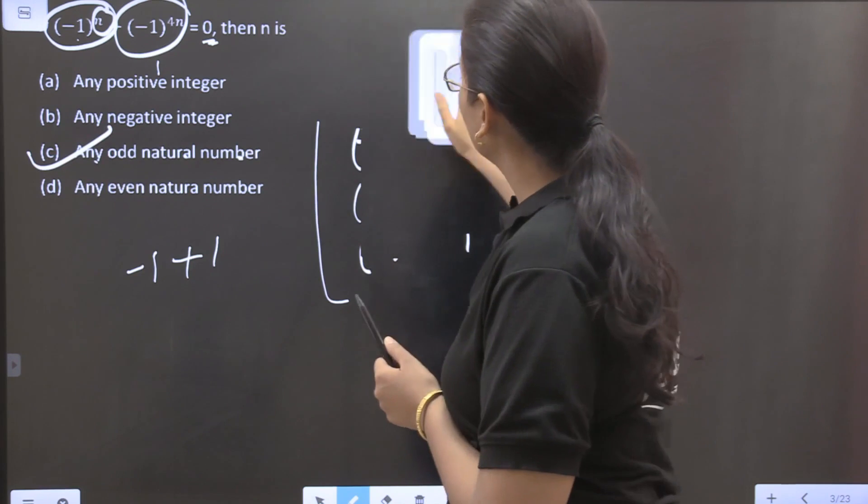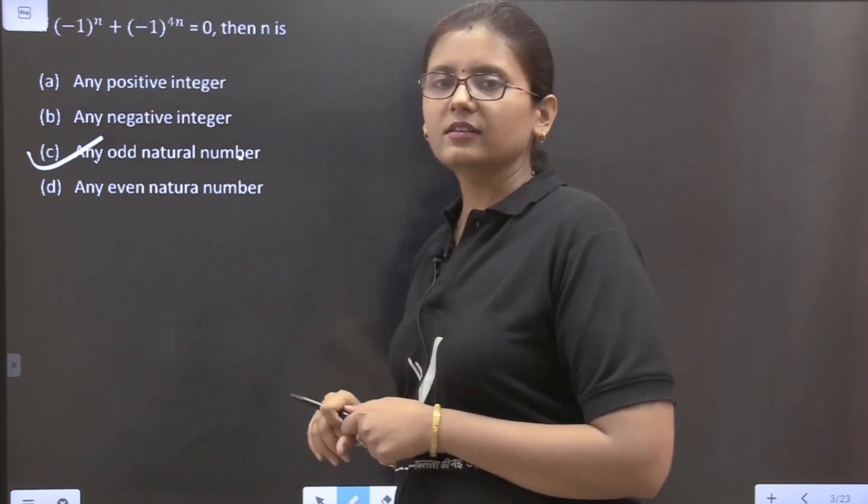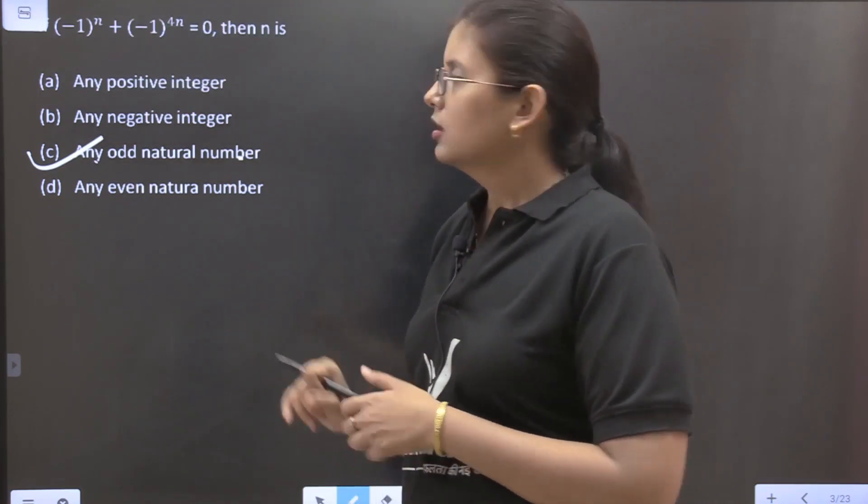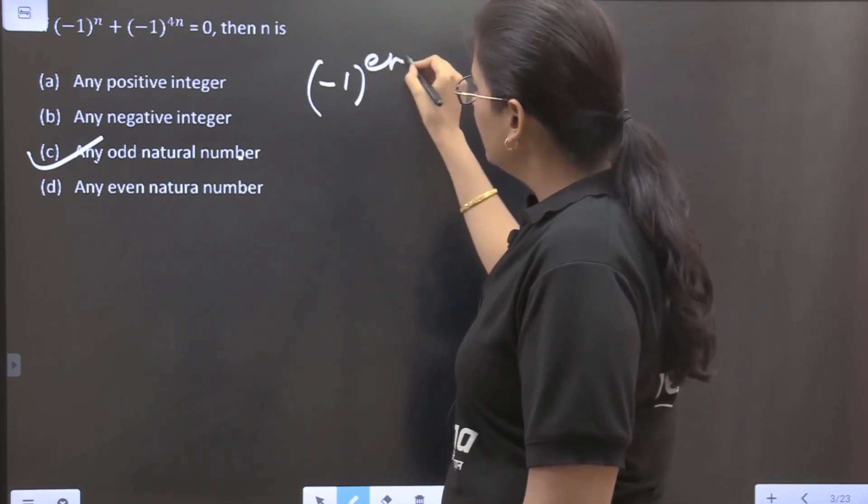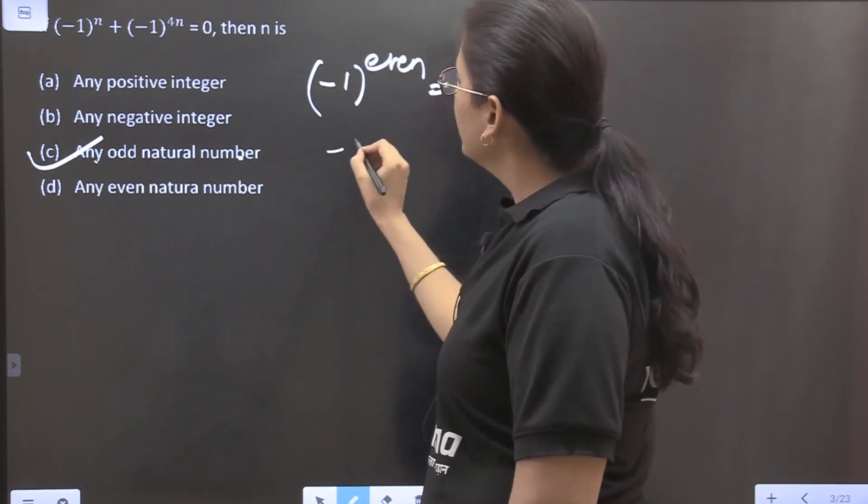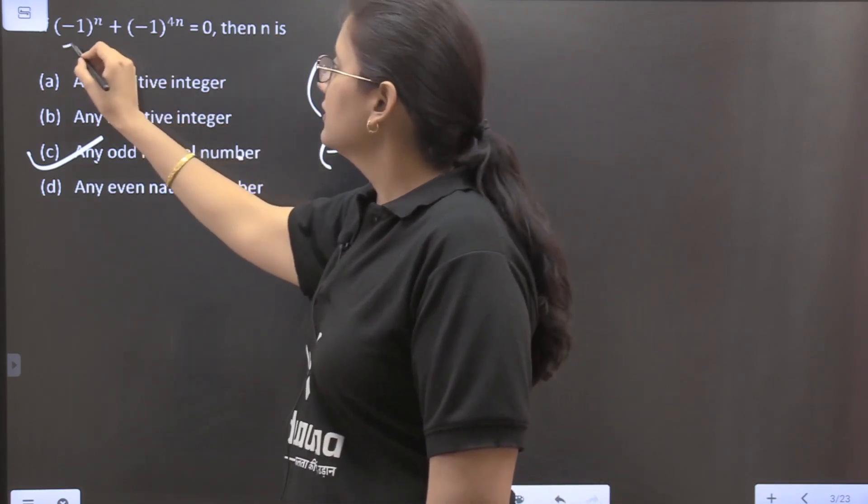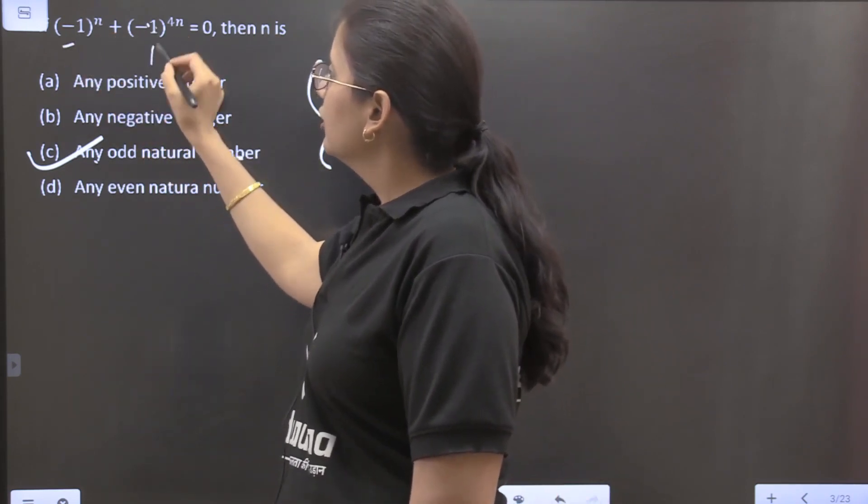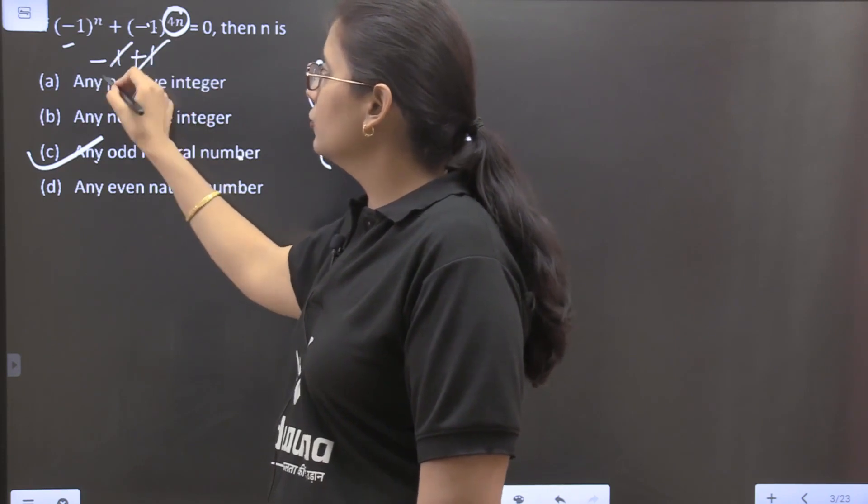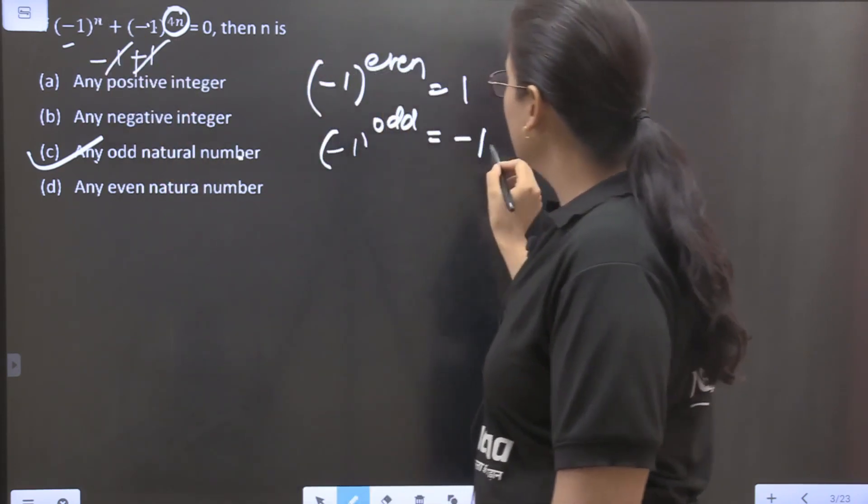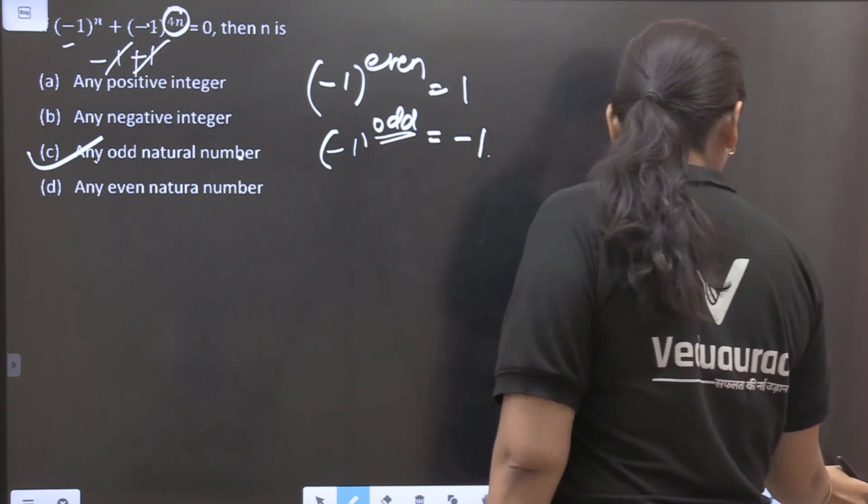So this is the way when a question comes to you, you know what is the power, what are exponents, everything. But when you get this type of question in exams you might get confused about what will be the nature. So you have to remember the concept: minus 1 when it has even power then it is 1 and when it has odd power then it is minus 1. For it to be 0, this will always be plus 1 because the power is even. Now this has to be minus 1 for these two to cancel out, and it will be minus 1 only when its power is odd. So you will take any odd natural number.